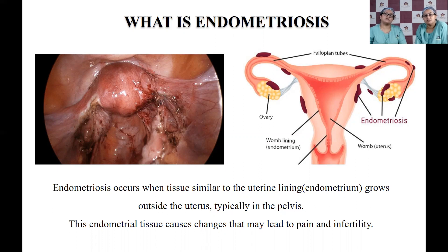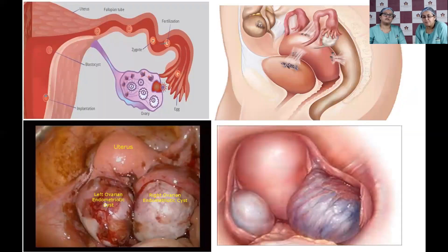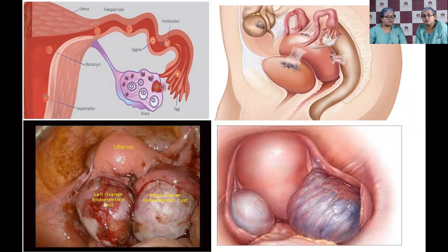Endometriosis is a condition where the lining of the uterus — the endometrium — grows outside the uterus, typically in the pelvis, and can cause pain as well as infertility. These pictures show endometriotic tissue encountered during laparoscopic surgery: large chocolate-colored cysts called endometriomas in the ovary, and tissue on the bladder, rectum, intestines, or surrounding the uterus.